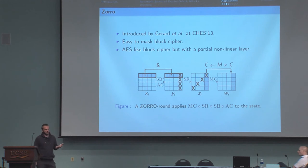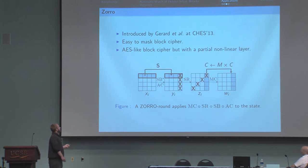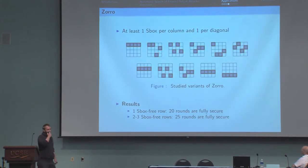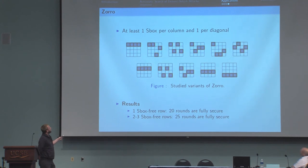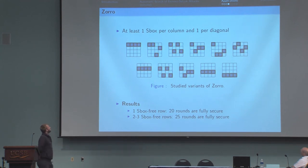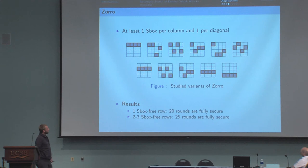We tried different positions for the Demirci-Selçuk attack, because they lead to best results against AES, so it could be interesting to see how they work on a design like Zorro. We studied 11 variants of Zorro. We chose to try different positions for the bytes on which we applied the S-boxes, but we imposed that at least one S-box is applied per column and per diagonal, because of the shift rows and the mixed column operations.